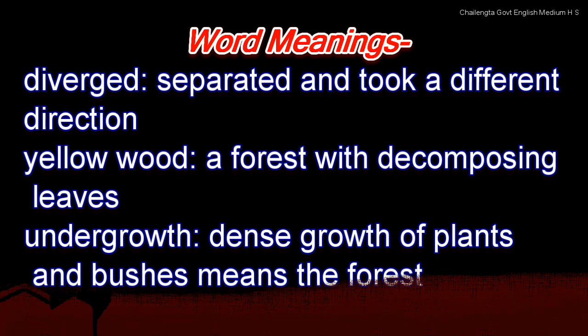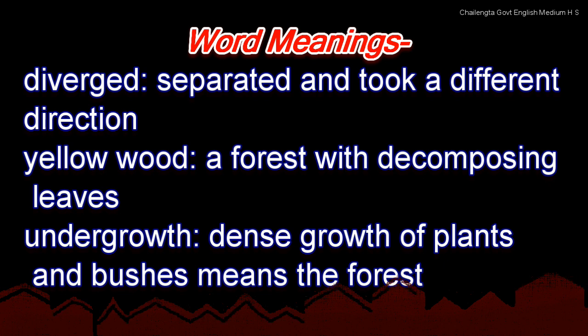Word meanings: 'Diverged' means separated and took a different direction. 'Yellow wood' means a wood with decomposing leaves. 'Undergrowth' means the dense growth of plants and bushes — meaning forest.